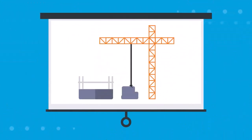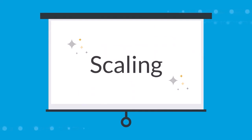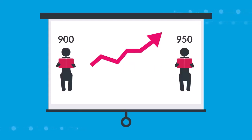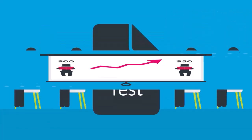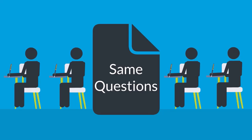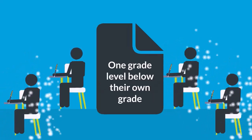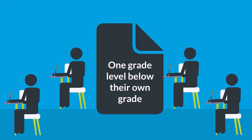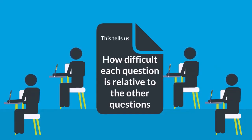Interested in the more technical side of how to build a scale like this in the first place? Check this out. Scale scores are created through a method called scaling, and a student's scale score will go up as the student learns and grows academically. First, every test question is tried out in a carefully planned research design where some students answer the same questions as each other. And to get the scale to extend across grades vertically, some students might answer questions from one grade level below their own grade. This tells us how difficult each question is relative to the other questions.